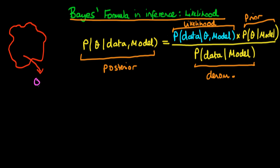We have individual one, individual two, and individual three. Prior experience tells us that they either come from a tribe which has a particular disease — in which case we say theta equals one, where theta represents whether their population has the disease present — or they come from a tribe completely free from this disease, in which case theta equals zero.